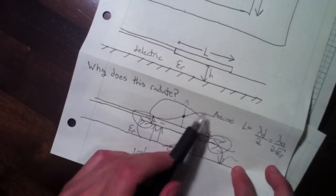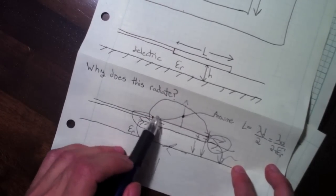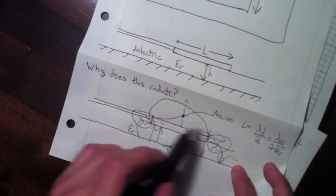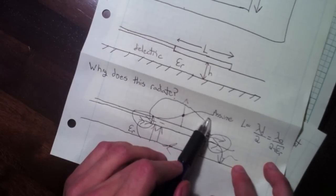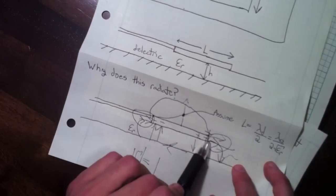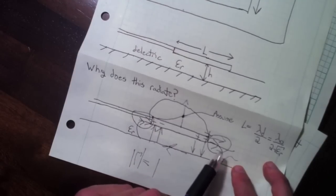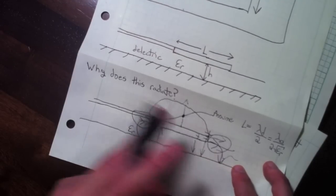Now it'll also radiate at three times that, as long as you can get the voltage and current distributions such that it's a minimum here and a maximum here for voltage, you'll get the same radiation because you get the same fringing fields.